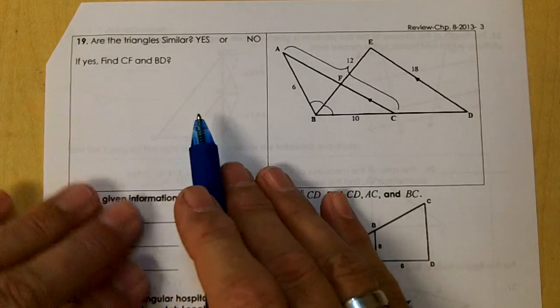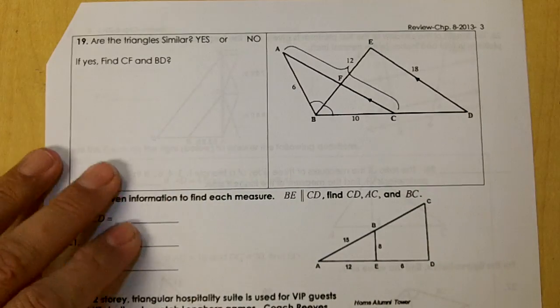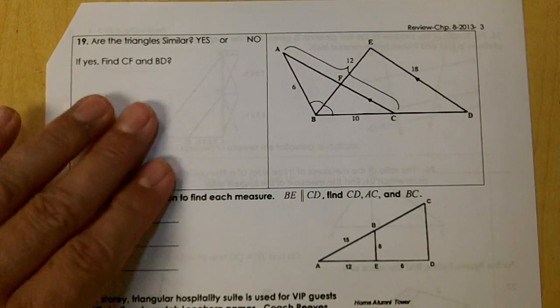Number 19, this is kind of a doozy. Are the triangles similar, yes or no? If yes, find CF and BD.